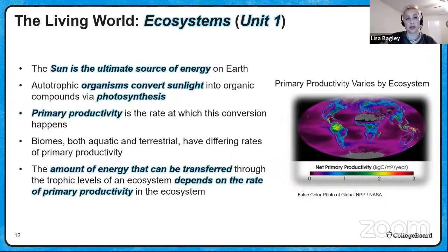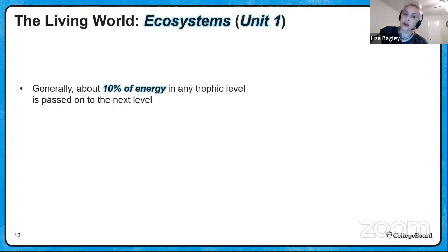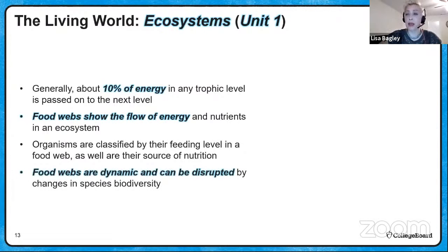About 10% of energy in any trophic level is passed on to the next level — we call this the 10% rule. Food webs show the flow of energy and nutrients in an ecosystem. Organisms in a food web are classified by their feeding level — primary consumers, secondary consumers, tertiary consumers — as well as their source of nutrition, whether they're autotrophs or heterotrophs. Food webs are dynamic and can be disrupted by a variety of factors, and changes in species biodiversity will definitely change your food web.